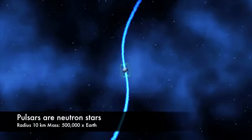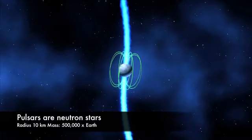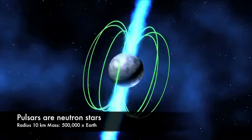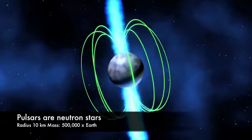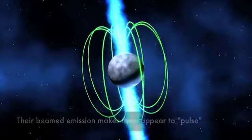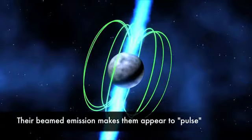Pulsars are neutron stars. They weigh about a half million times as much as the Earth but are only 20 km across. Their rotation makes them appear to pulse once per rotation period and they spin up to an amazing 700 times per second.